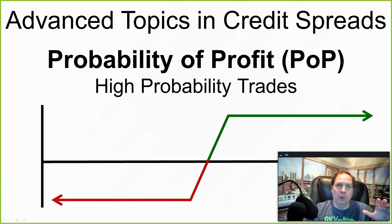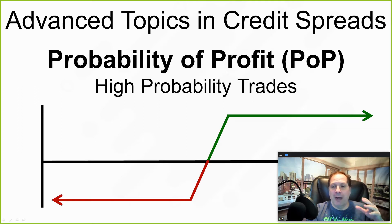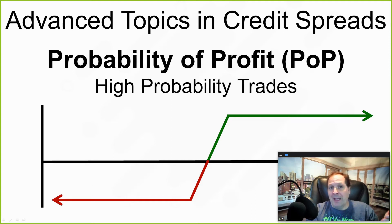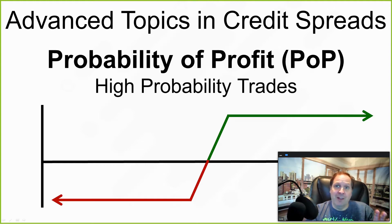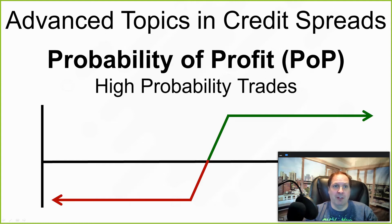When you trade stocks, you try to make a prediction about your outlook of where the stock is going. And most people, most of the time, are really bad at predicting the market. But with credit spreads, we use math and probability theory to take positions with a high probability of profit.